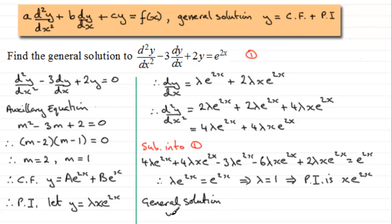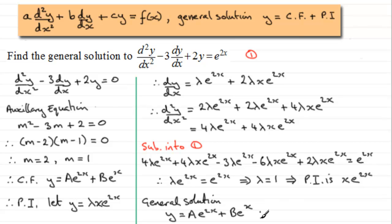Our particular integral is x e to the power 2x, which means our general solution in the usual way is y equals the complementary function plus the particular integral. The complementary function is A e to the power 2x plus B e to the power x, and then we add our particular integral, which is x e to the power 2x.